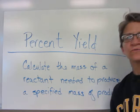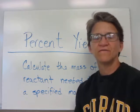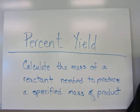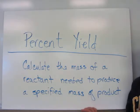Percent yield. This is one of the more difficult problems that involves percent yield. It's when you're asked to calculate the mass of a reactant needed to produce a specified mass of a product.